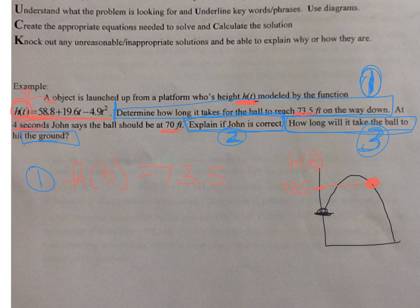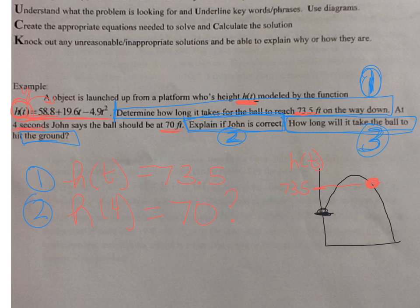The next question: at four seconds, John says the ball should be at 70 feet. Since t is time, I want to find h(4) — plug in t = 4 — and see if it equals 70 feet. It says to explain, and explain means to use words. So you're going to have to verify whether h(4) equals 70 and then explain your answer.